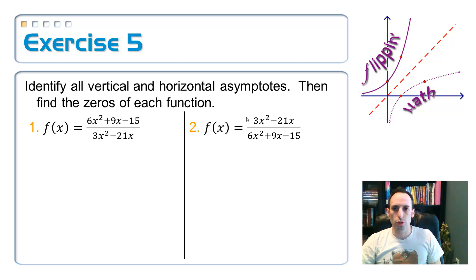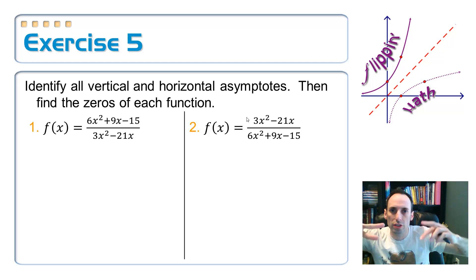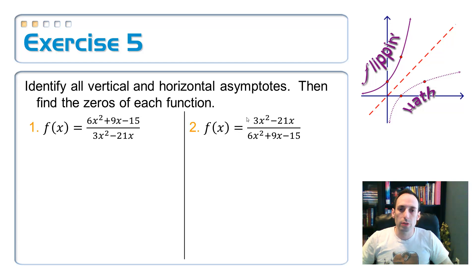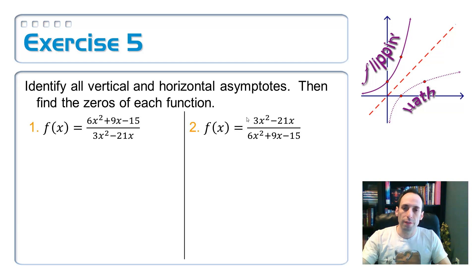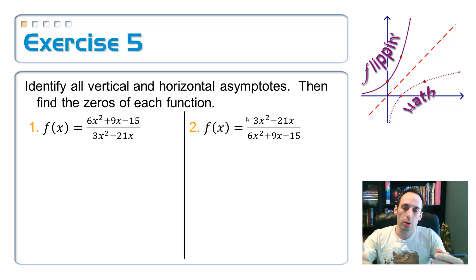Are you ready to try this on your own? Here are two problems for you — I just took the same functions and flipped them over, so you only have to factor once. That's the first step: go ahead and factor, then find your vertical and horizontal asymptotes, your x-intercepts, and while you're at it, find the y-intercepts too.